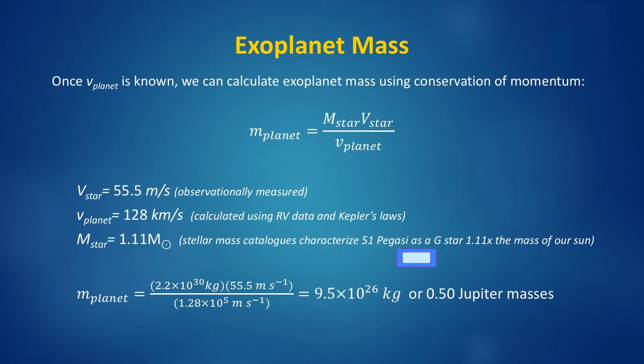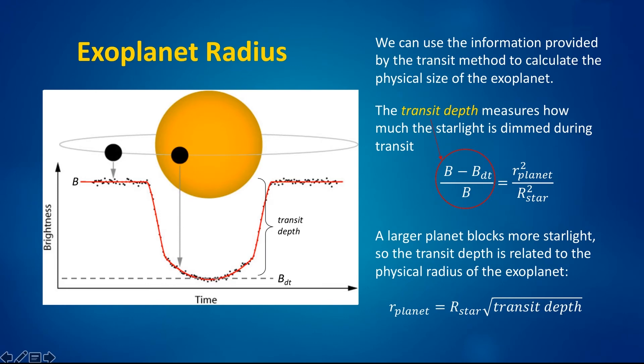Once the velocity of the planet is known, we can calculate the exoplanet mass in this way. So the observational velocity of the star, the mean velocity of the star in its orbital period, is 55 kilometers per second. The total velocity, as we've seen, is closer to 130 kilometers per second. Plugging this into the gravity equation gives a mass of half a Jupiter mass. And so this is the calculation that's done in all exoplanets studied with the radial velocity technique to measure their mass.